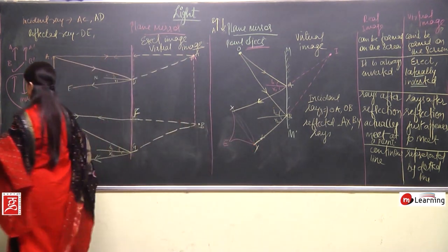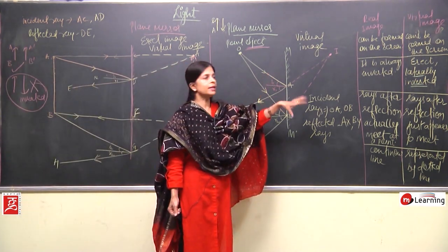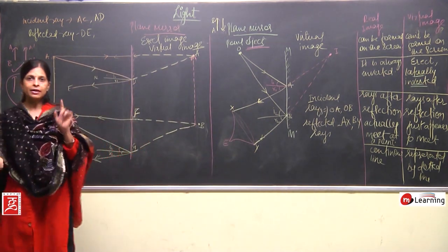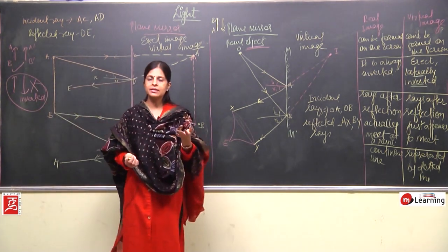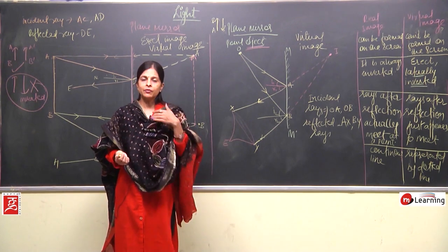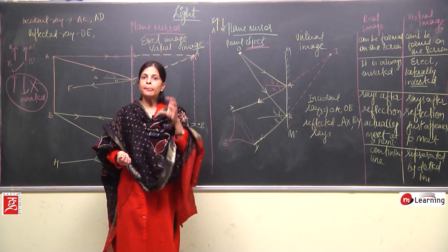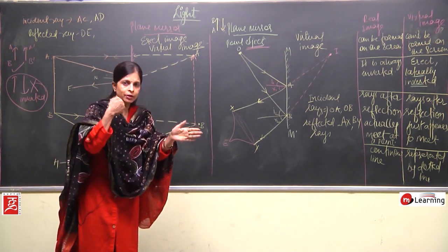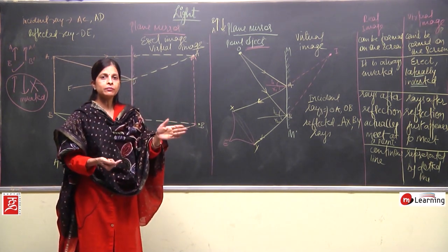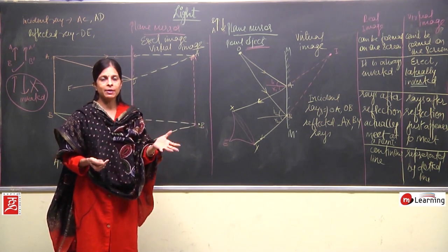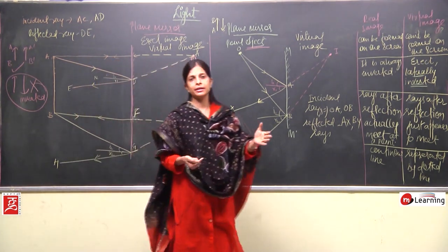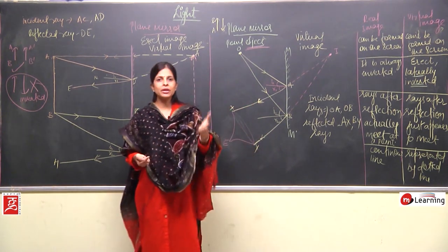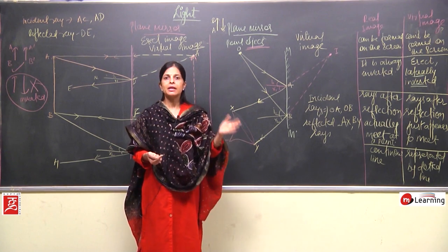Real image can be formed on a screen, but a virtual image cannot be formed on a screen. Just as when we see ourselves in a mirror, we can see our reflection only when we stand in front of the mirror. If we replace the mirror with a screen, we will not be able to see our image. So the image in a plane mirror is virtual — any image which cannot be formed on a screen is a virtual image.